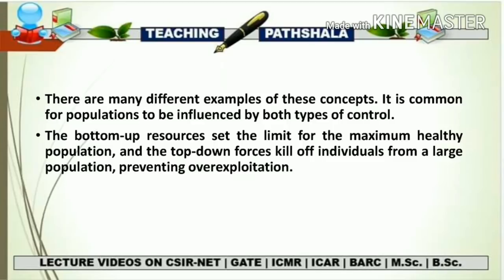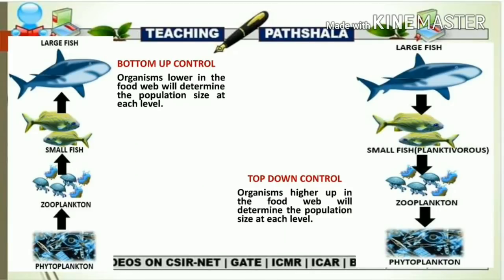Both top-down and bottom-up controls operate in ecosystems depending on the situation. It is common for populations to be influenced by both types of control: bottom-up resources set the limits for the maximum healthy population, and top-down forces kill off individuals from large populations, preventing over-exploitation. In bottom-up control, organisms lower in the food web determine population size at each level; in top-down control, organisms higher in the food web determine population size at each level. Evidence from many ecosystem studies shows both controls operate to some degree.